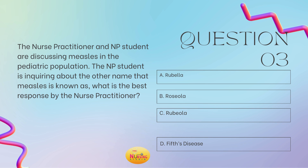Roseola is also called sixth disease — remember the S. Fifth disease is also called slap cheek — think of the five fingers — erythema infectiosum. And rubella is also known as German measles. So to recap: German measles is rubella. Sixth disease is roseola. Measles is rubeola. Erythema infectiosum, or slap cheek, is fifth disease.